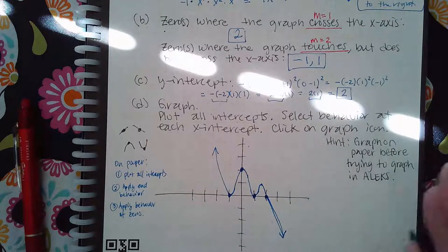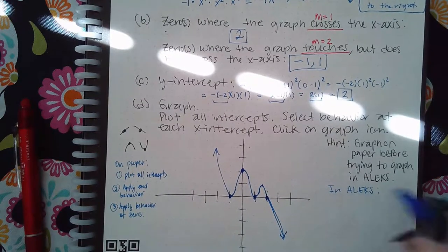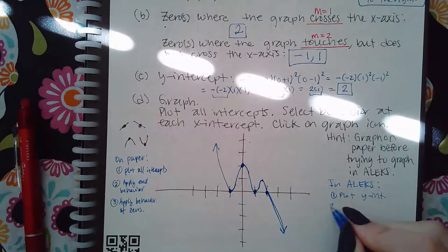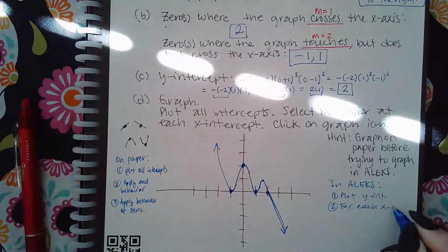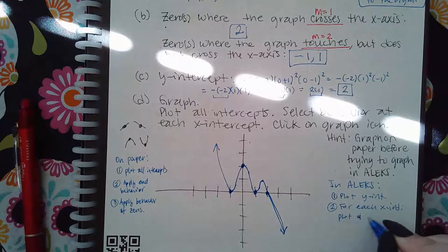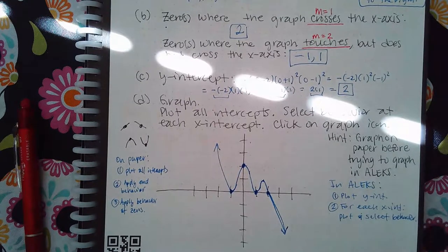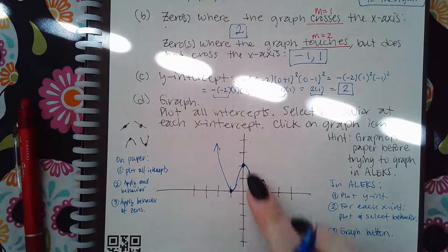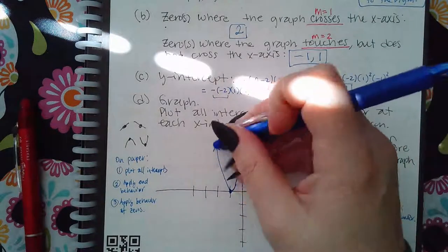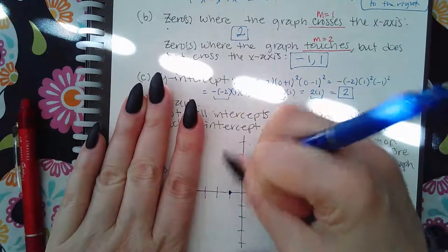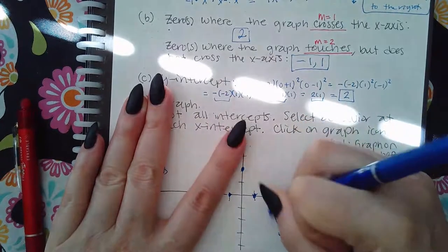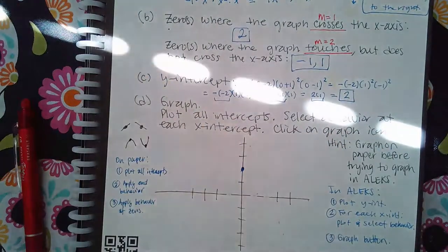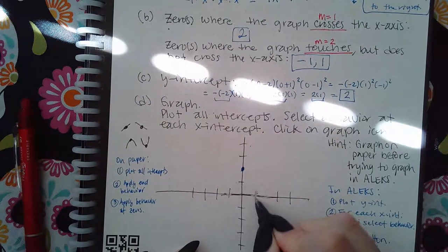Now that you have everything, in ALEKS the first thing you do is plot the y-intercept — it will let you do that with no problem. Then for each x-intercept you plot and select the behavior; you have to do them both at the same time. The last thing you hit is the graph button and it will draw all the curves for you.